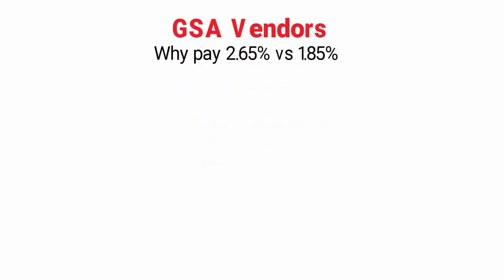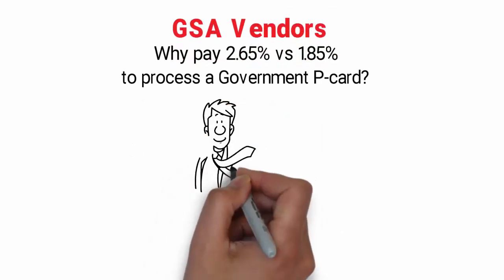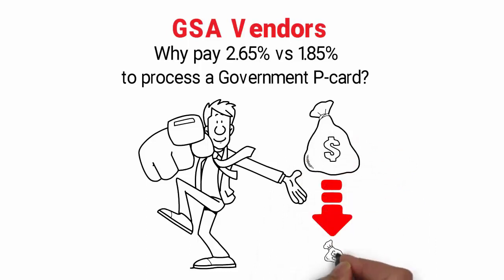GSA vendors, why pay 2.65% versus 1.85% to process a government P-Card? The choice is yours.